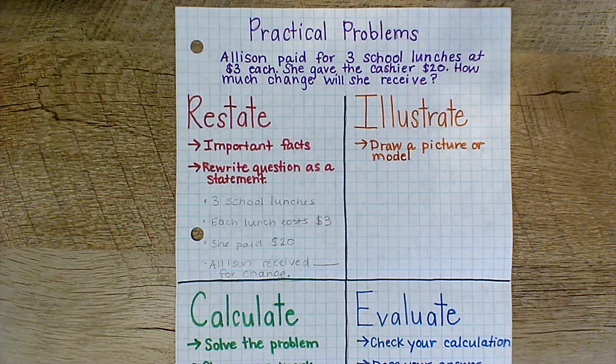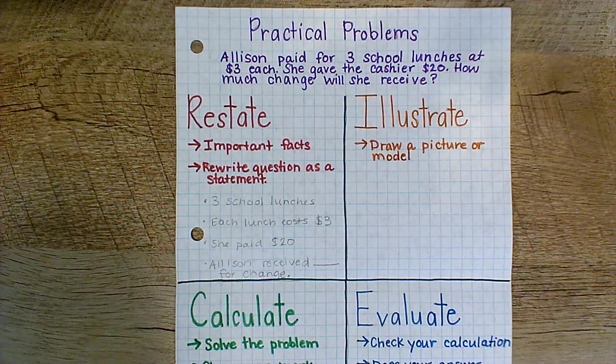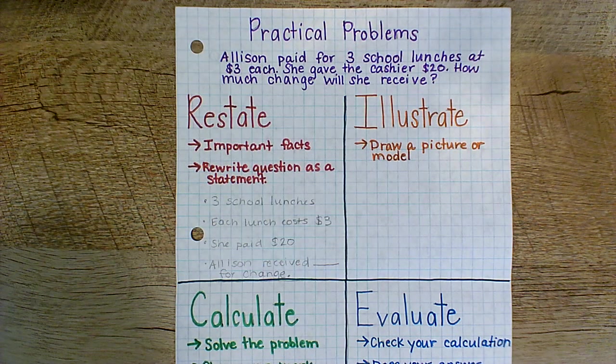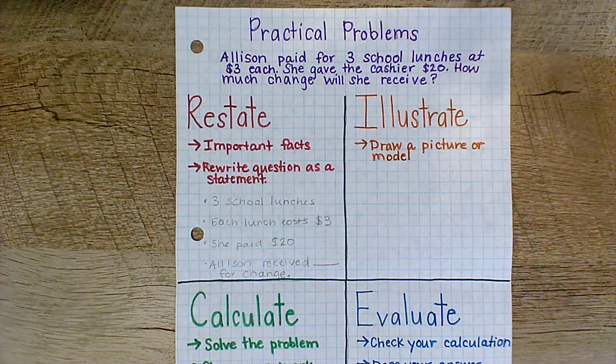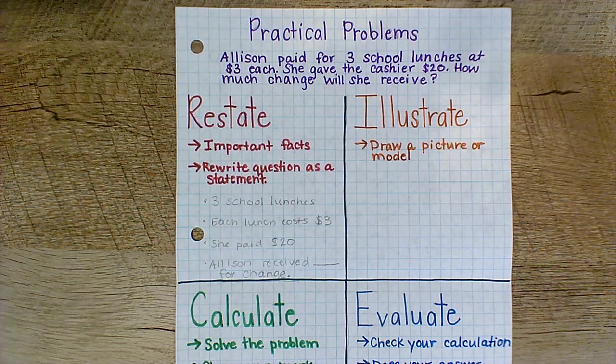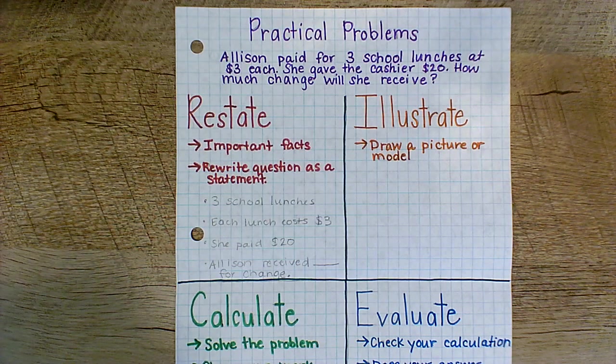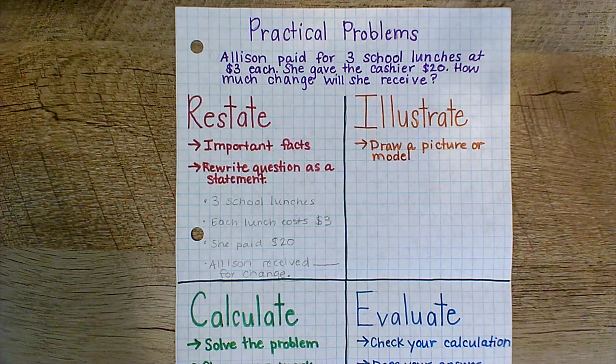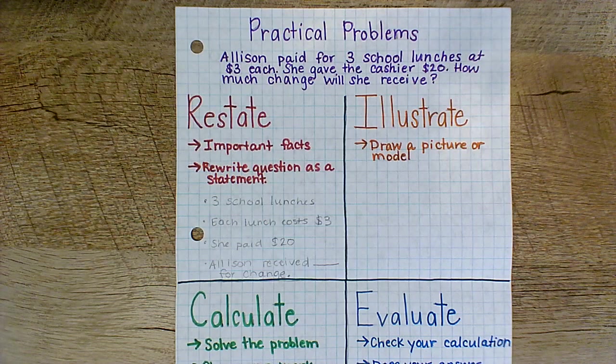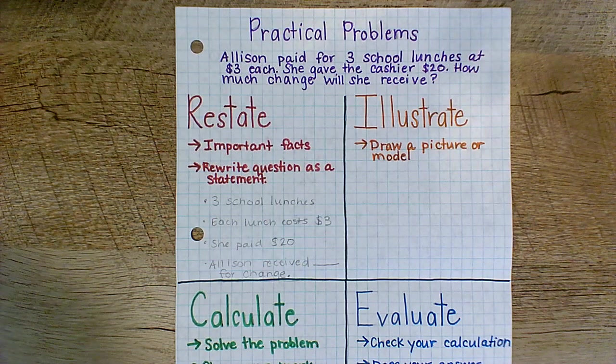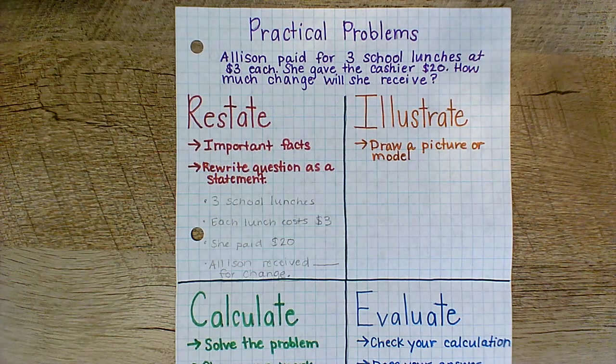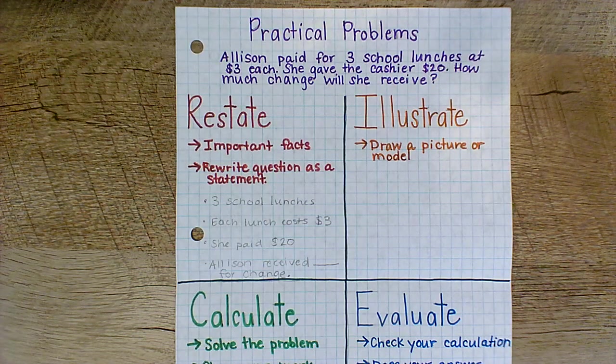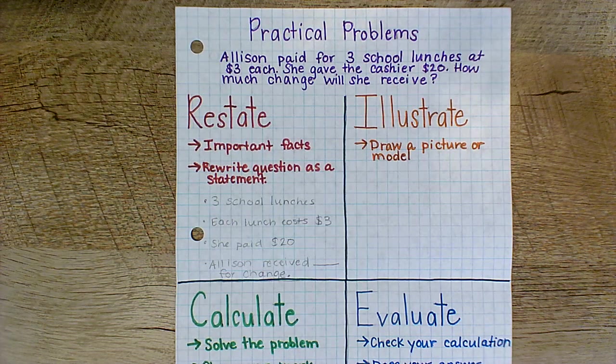Now our second step, I illustrate, or you can identify the steps of the problem that you would need to solve. So let's go back to the problem again. And let's think about the steps involved. Allison paid for three school lunches at three dollars each. Then she gave the cashier twenty dollars. So how much change will she receive? Well, I can visualize that this problem is going to take multiple steps.